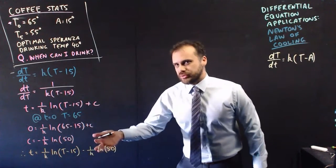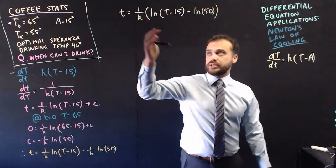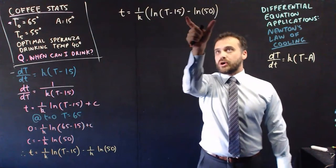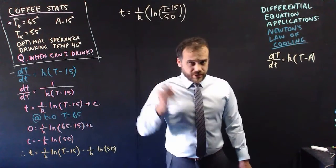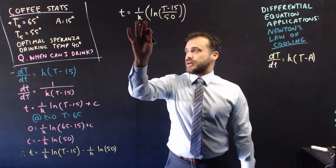I can probably tidy this up a little bit by factorizing, but then also using my log laws. So factorizing brings the 1 on k out the front. But then we have a log minus a log. And we can use our log laws to do a division. So things are starting to tidy up, but we're not finished yet. We still need to know that k value.